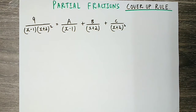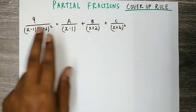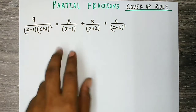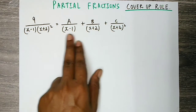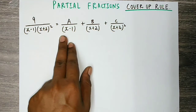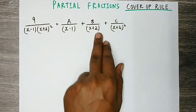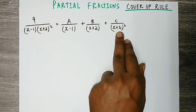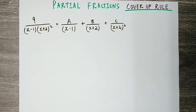Now we will use the cover-up rule, or coverup method. 9 divided by (x minus 1)(x plus 2) whole square. The factor x plus 2 is repeated. So we write: A divided by (x minus 1), plus B divided by (x plus 2), plus C divided by (x plus 2) whole square.